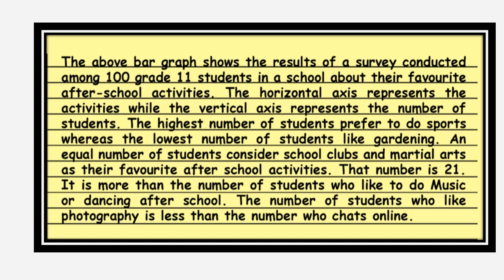The above bar graph shows the results of a survey conducted among 100 grade 11 students in a school about their favorite after-school activities. The horizontal axis represents the activities, while the vertical axis represents the number of students. The highest number of students prefer to do sports, whereas the lowest number of students like gardening.